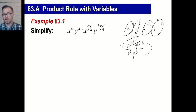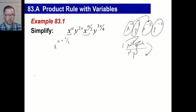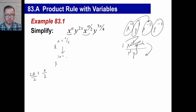All we're doing is the same thing but with fraction exponents. Let's write it this way. We have x to the a plus a over 2. Can we add a plus a over 2? Common denominator is 2, so that'll be 2a over 2 plus a over 2, which gives 3a over 2. So this just becomes x to the 3a over 2. That's it.